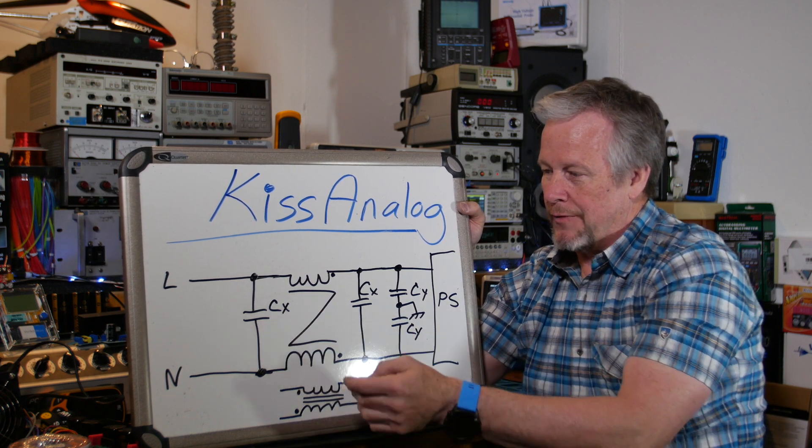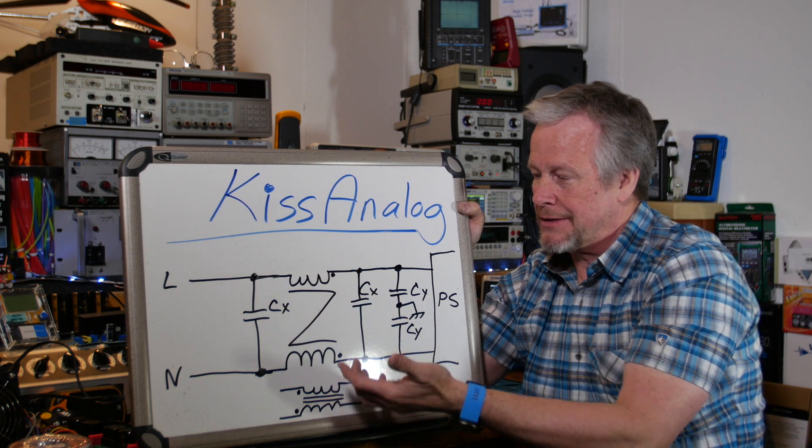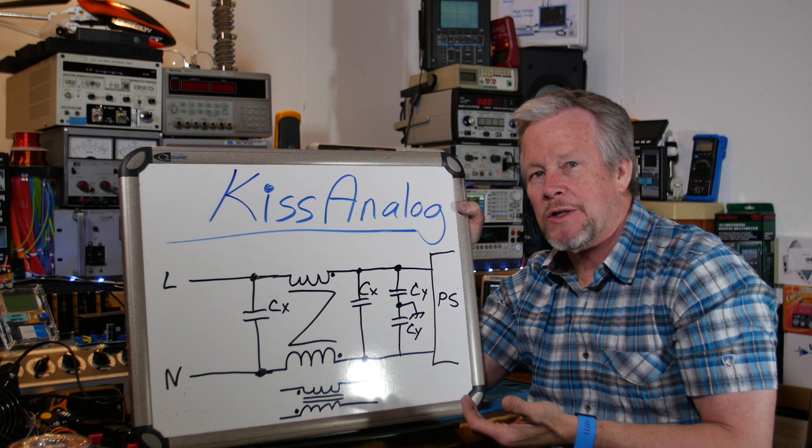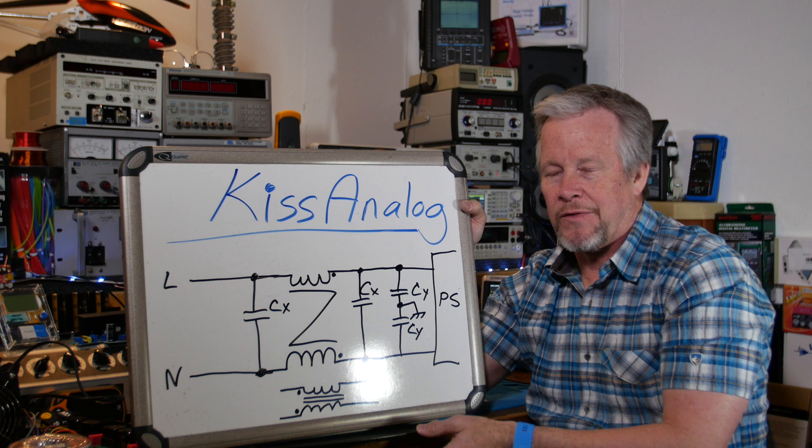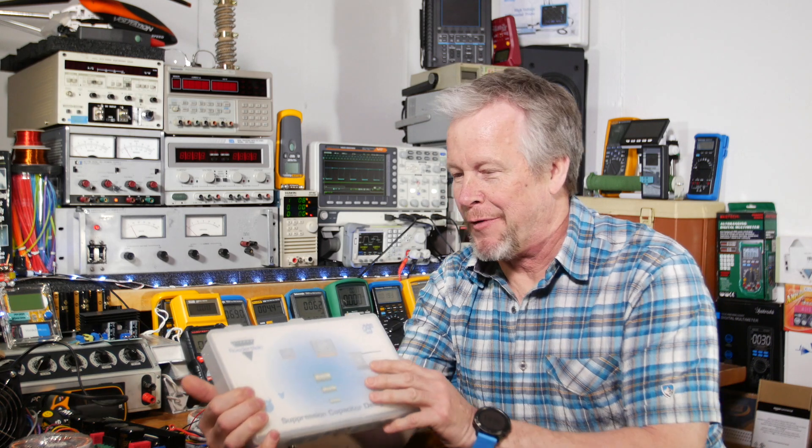Because these X caps, usually want them higher capacitance, like not 4700 puff. You probably want a one microfarad or you might want a 2.2 microfarad for that matter. So yeah, a Y cap 2.2 would be gigantic, but no one would use a 2.2 in a Y cap. All right, let's come over and take a look at them.